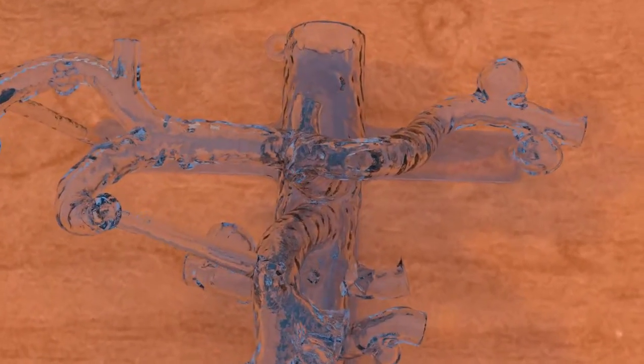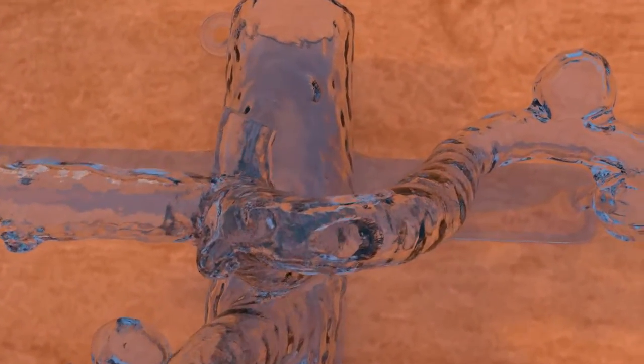A small splenic artery aneurysm version of the model is available as well, with an 11mm proximal aneurysm that has a 7mm neck, and a 10mm distal aneurysm with a 4mm neck.